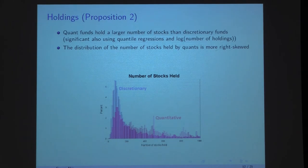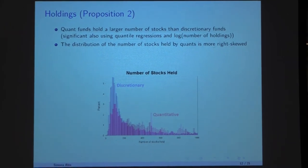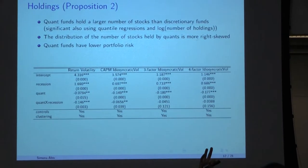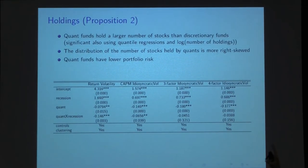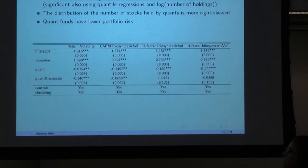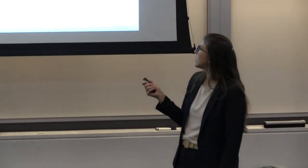We know from basic portfolio theory that we want to diversify, so does holding more stocks mean quant funds are more diversified and less risky? I build different measures of portfolio risk — the simplest being 12-month rolling volatility of returns, plus more complex measures accounting for factor risk exposures. Independently of which measure I use, quantitative funds have statistically lower risk in terms of volatility of returns or excess risk of returns. That's intuitive: they hold more assets, they're more diversified, so we should expect this.